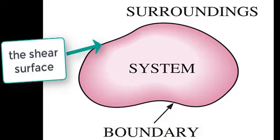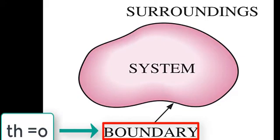Note that the boundary is the contact surface shared by both the system and the surroundings. Mathematically speaking, the boundary has zero thickness and thus it can neither contain any mass nor occupy any volume in space.